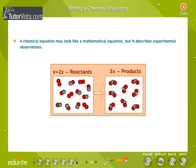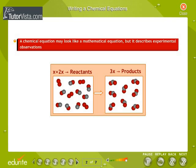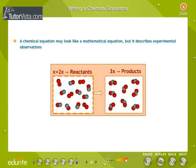A chemical equation may look like a mathematical equation, but it describes experimental observations. Reactants appear on the left-hand side of a chemical equation, while products appear on the right. The products which result from combining the reactants are known from experimental observations — they cannot be derived mathematically.